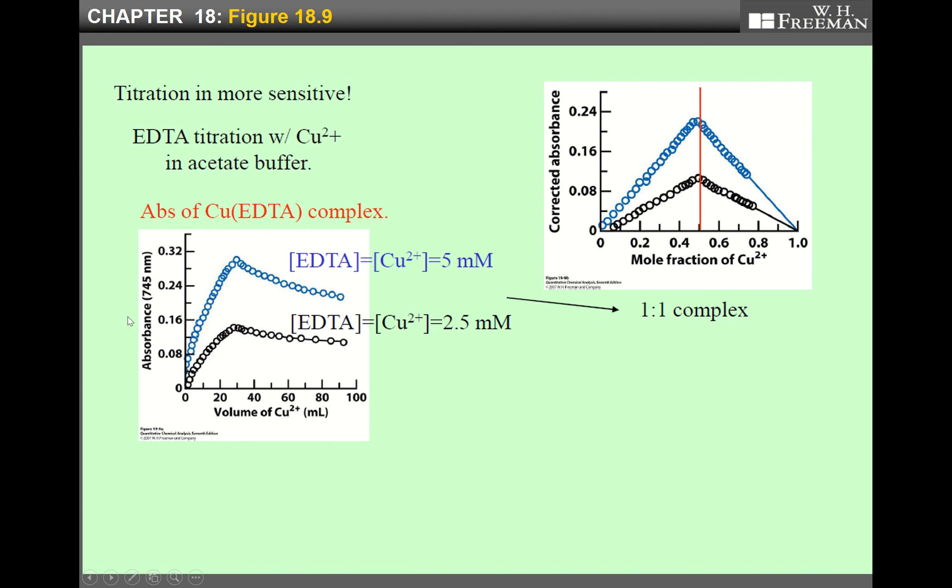And then this data should be converted into a Job's plot. And this absorbance must be corrected by subtracting EDTA and copper ion absorbance at a certain wavelength. This volume must be converted to mole fraction of copper ion. And then this very nice result was obtained. Why two curves? Because the same experiment was done at two different wavelengths. And then as we see, at mole fraction of 0.5, you see the maximum absorbance. So the answer is that there is a one-to-one complex between EDTA and copper ion.